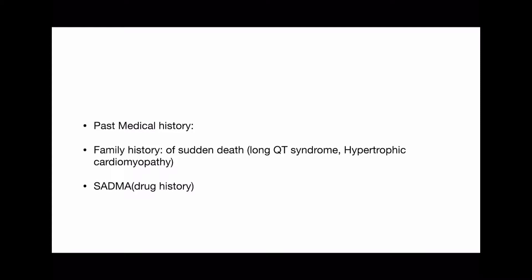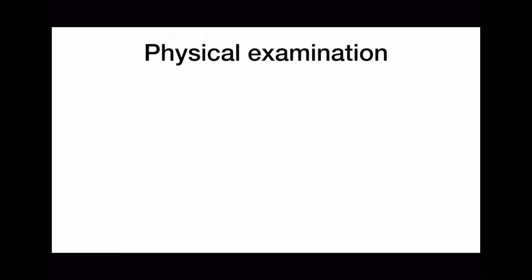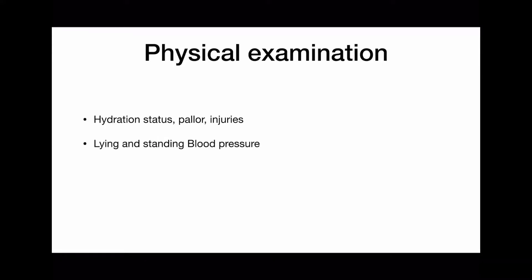Drug history is very important — particularly look for antihypertensives and diuretics. In physical examination, assess general appearance including hydration status, pallor, and any injuries sustained. In vitals, measure lying and standing blood pressure to detect postural drop. Examine the cardiovascular system for cardiac murmurs and perform a neurological examination for any deficits. At the bedside, check blood glucose levels and request an ECG if available.